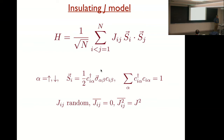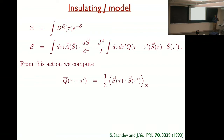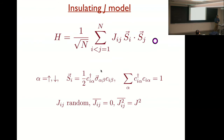One thing you can show quite easily is that at n equals infinity, you can rephrase this model as a zero-dimensional quantum theory where the dimension is just time. In path integral language, you average over the J_ij couplings. There are subtleties about replicas and replica symmetry breaking which I'm putting under the rug — everything is replica-diagonal. You write the path integral for this model, average over J_ij, take the large-n saddle point, and you get the following problem.